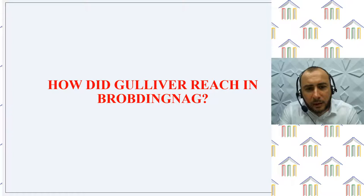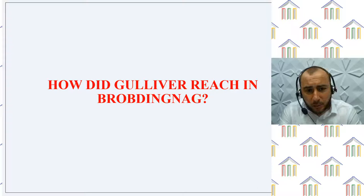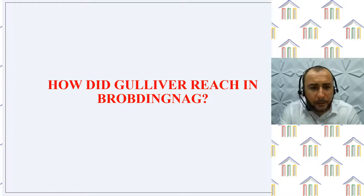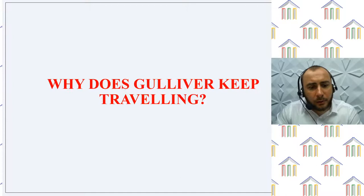And how did Gulliver reach Brobdingnag? When Gulliver was on a ship, they had to face a fierce storm for days. When the storm abated, another problem hit them — there was no drinking water available on the ship. While they were searching for water, a boy saw an unknown land from the top mast of the ship and thought to search for water there, and he reached Brobdingnag.